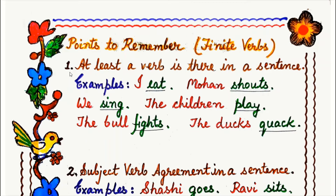Point number one: at least a verb is there in a sentence. Meaning, every sentence has a verb. And in that sentence, if there is at least one verb, we can take it as our finite verb.